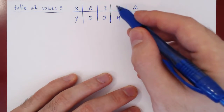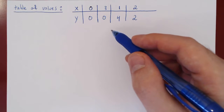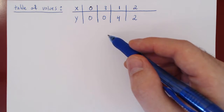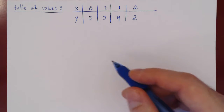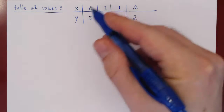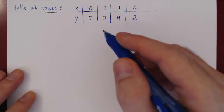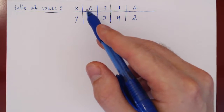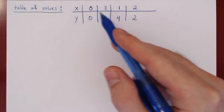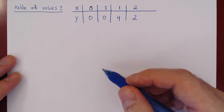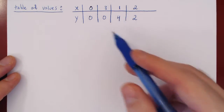Now we have our table of values, we've classified the two critical points, and we have our inflection point. We are ready to make an accurate sketch of the graph. Your sketch does not have to be to scale — all you want to show is that you understand how to portray the key elements of the graph.